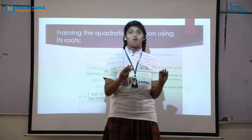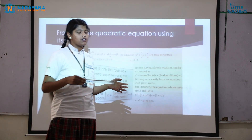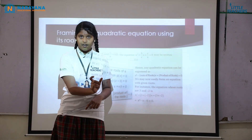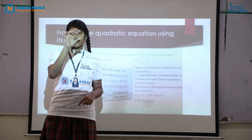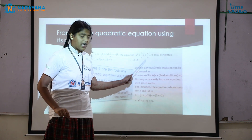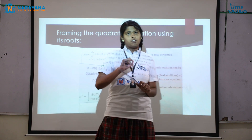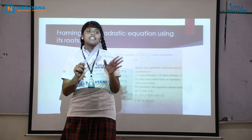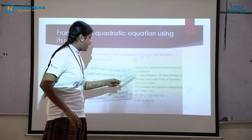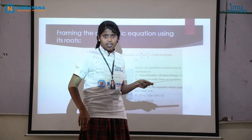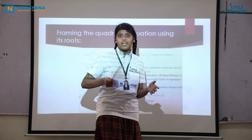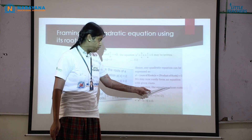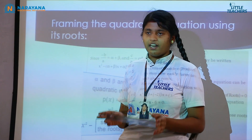Now entering into our main topic: formation of a quadratic equation using roots. The general form is Ax² + Bx + C = 0. Dividing the entire equation by A gives x² + (B/A)x + (C/A) = 0. Note that +B/A can be written as −(−B/A). So the equation becomes x² − (−B/A)x + (C/A) = 0. Since −B/A is the sum of the roots and C/A is the product of the roots, the formula is: x² − (sum of roots)x + (product of roots) = 0.